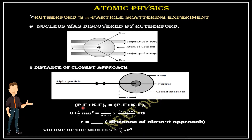Initially it has potential energy zero and initial velocity u. Using the electric potential energy formula (1/4πε₀)(Ze·Ze/r), and finally kinetic energy is zero because it is simply repelling back. By solving this equation we will get r, which equals the distance of closest approach.